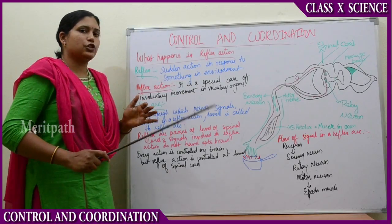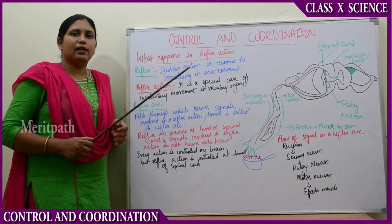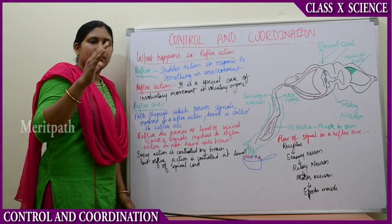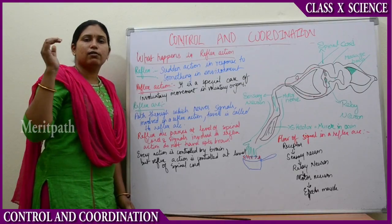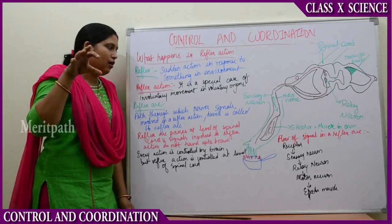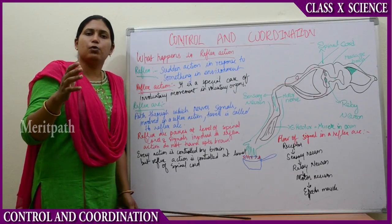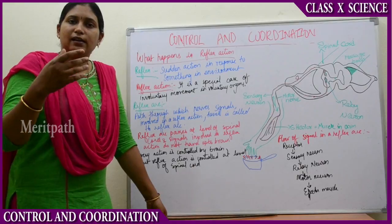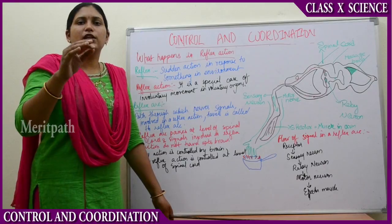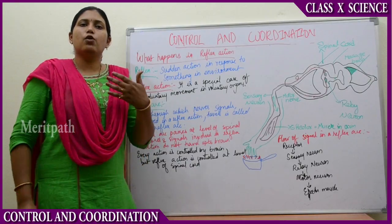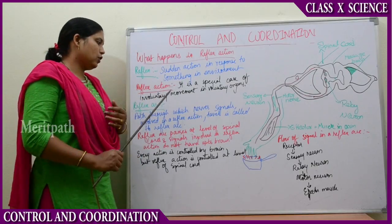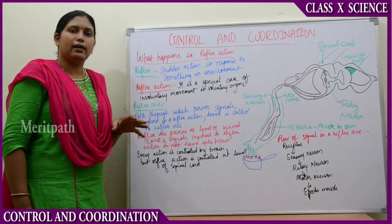What is reflex action? It is a special case of involuntary movement in voluntary organs. When you touch a hot iron, you immediately move your hand back. That happens suddenly — it is an involuntary action with a voluntary organ. Our hand can be moved voluntarily, but suddenly due to the change in temperature we immediately move it back involuntarily. That is reflex action: a special case of involuntary movement in voluntary organs.